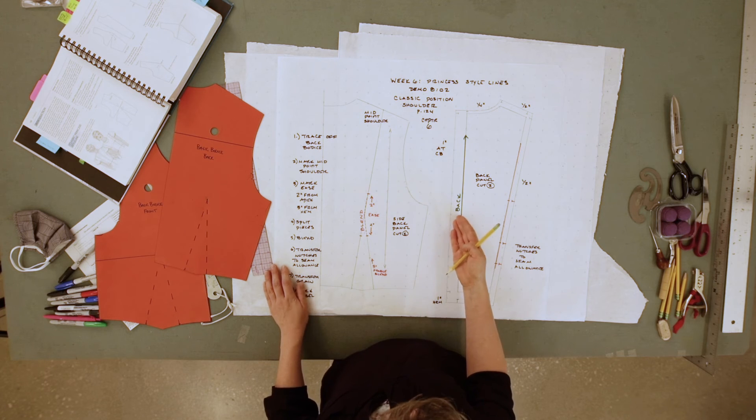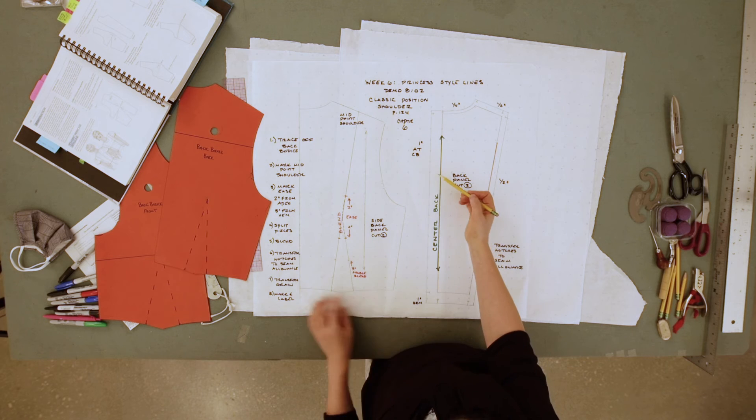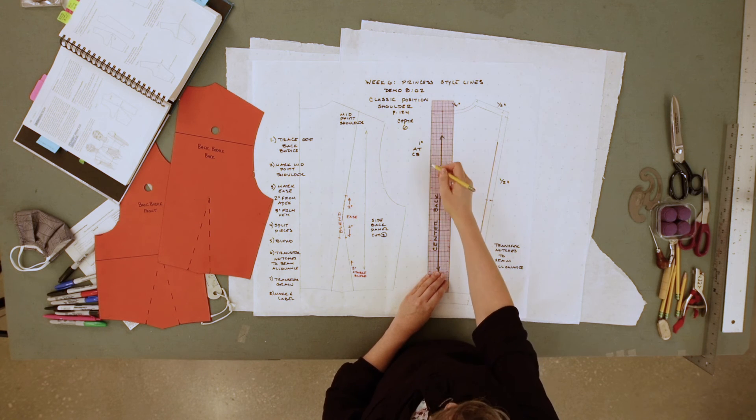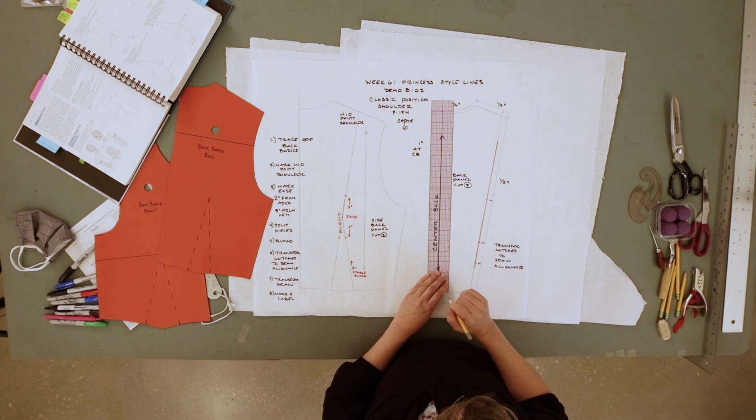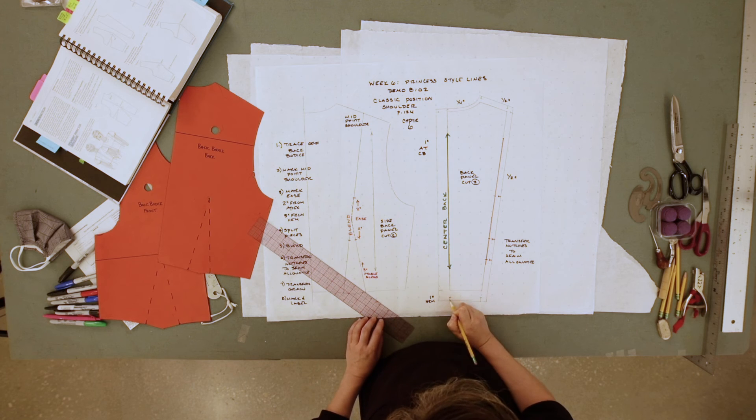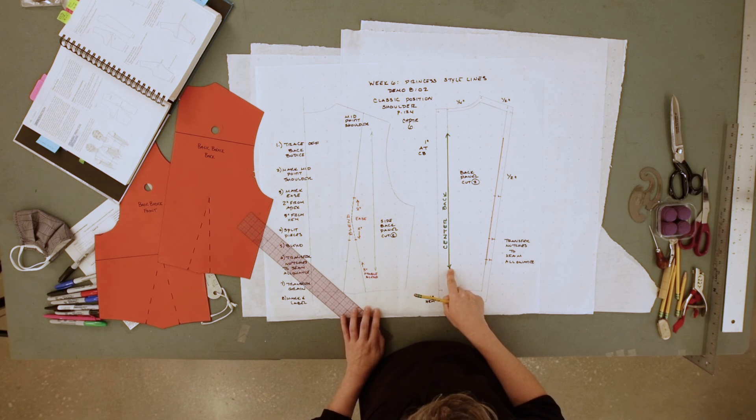The way that you would do that is we need to add a one inch seam allowance off of the center back. You will make sure you notch your center back seam and you're going to need to mark your grain line on the center back.